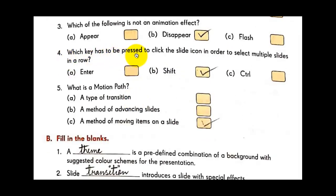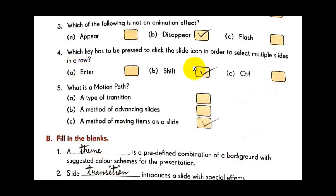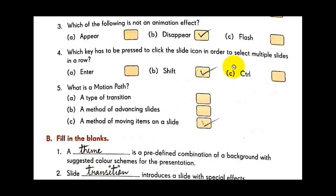Question four: Which key has to be pressed to click the slide icon in order to select multiple slides in a row? Options: Enter key, Control key, or Shift key. The answer is B — Shift key.